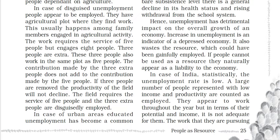In the case of disguised unemployment, people appear to be employed. They have agricultural plots where they can find work. This usually happens in families who engage in agricultural activities. Work requires the service of five people, but eight people are engaged. Three people are extra and these three people work in the same plot with five people.